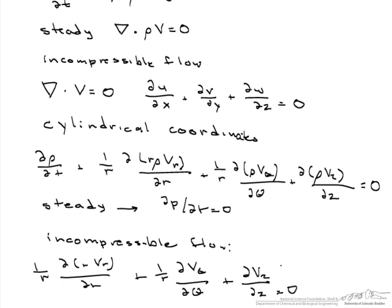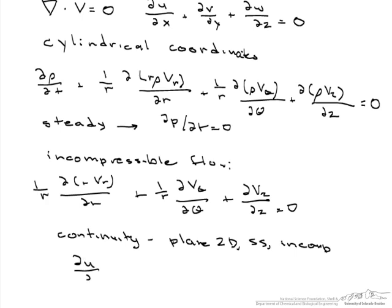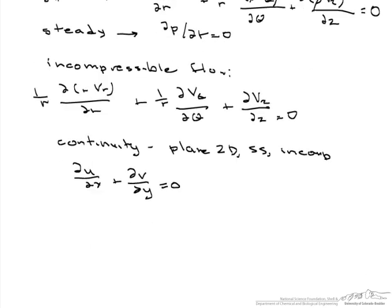So if we have a steady, incompressible, plane two-dimensional steady-state incompressible flow, our continuity equation simplifies to du/dx + dv/dy = 0. And what this does is it allows us to define what's known as a stream function.